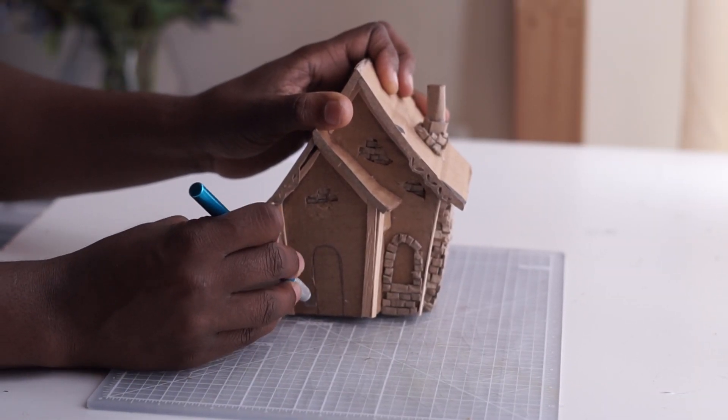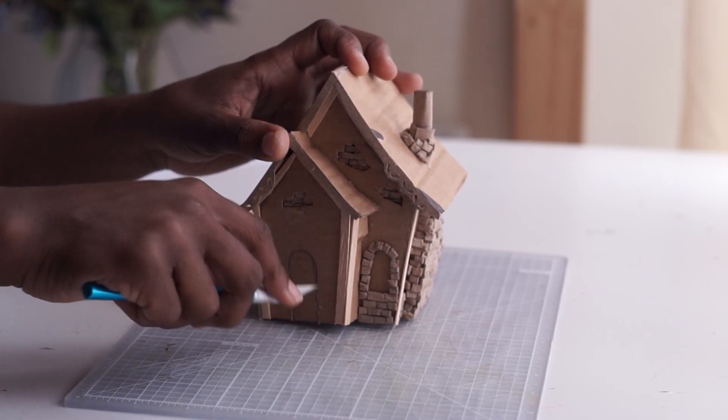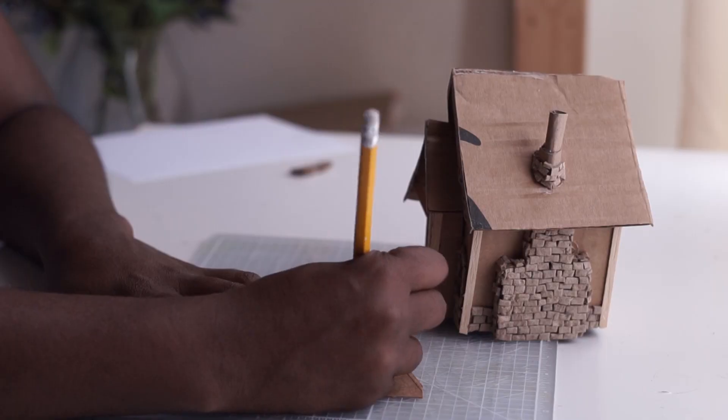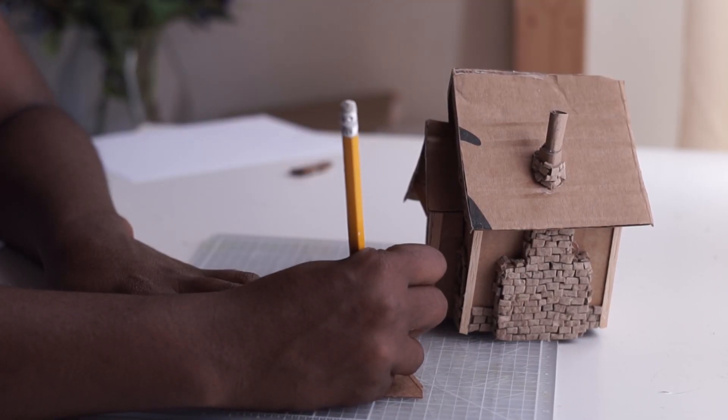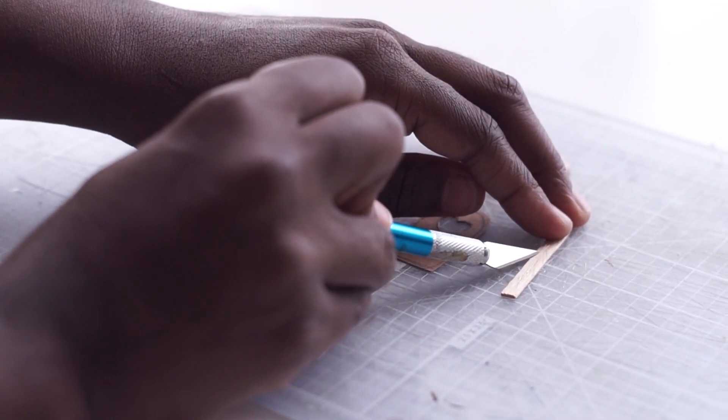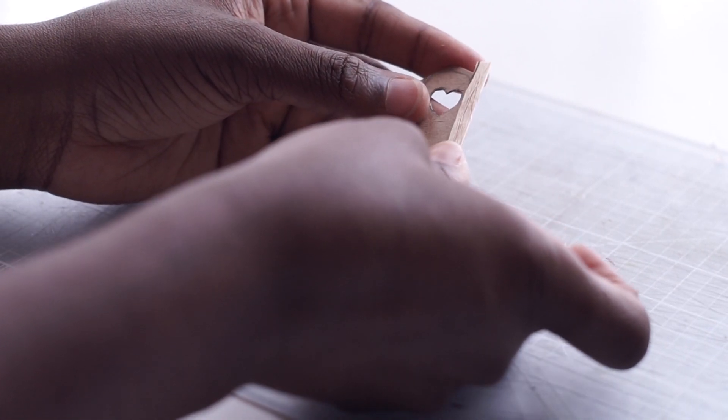I probably should have cut out the door and the windows while the cardboard was flat, but I forgot to do that. So, here I am, just cutting it out now to replace it with wood. To give these wooden design elements a little bit more texture, I scratched them up using my X-Acto knife, and then I glued them to some more cardboard using hot glue.